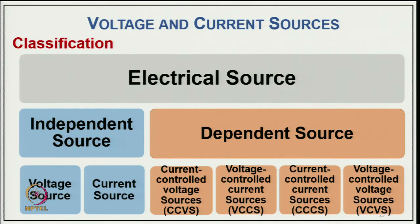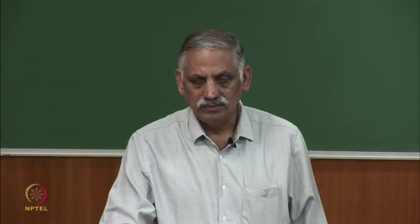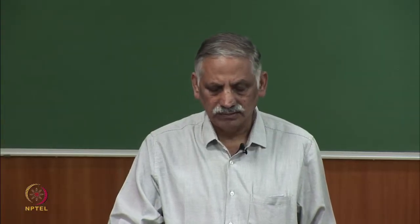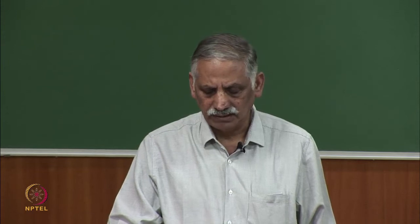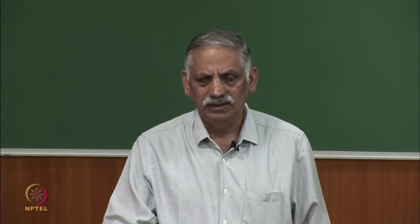Here we have a classification of electrical sources. We have independent sources — two kinds: voltage sources and current sources. We also have dependent sources classified into four categories: current-controlled voltage source (CCVS), voltage-controlled current source (VCCS), current-controlled current source (CCCS), and voltage-controlled voltage source (VCVS). In practice, none of the sources are truly independent — they depend on one another, as we will discuss in the next slide.